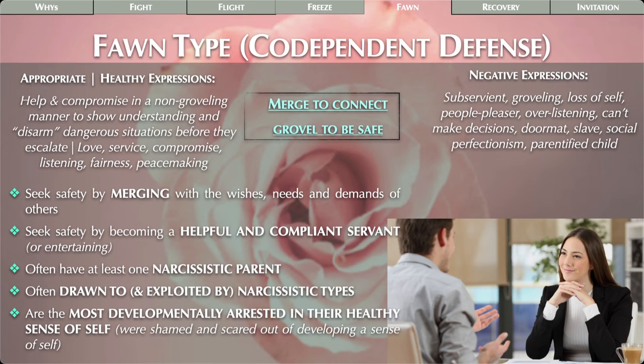The last point on the fawn type: they're often the most developmentally arrested in their healthy sense of self, because as children they were shamed and scared out of developing a sense of self. They weren't allowed to have their own needs or just be themselves — they were shamed and punished for it. So they never actually developed a sense of self, which is why they often don't know what they want and can't make decisions.